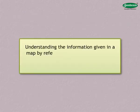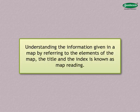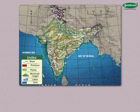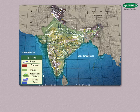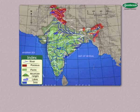Map Reading. Understanding the information given in a map by referring to the elements of the map, the title and the index is known as map reading. For example, you can read the colour map number 6, India Physical, in the following way. The main aim of this map is to show the physical features of India, as understood from its title. This map shows mountain ranges, plateaus, plains, rivers, lakes, seas, etc., besides showing the altitude of the different regions. The altitude of the regions is shown by different colours and the index gives the meaning of each colour.